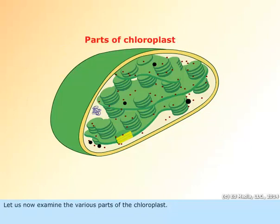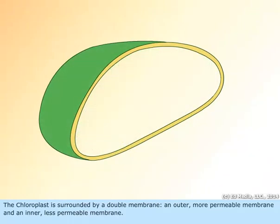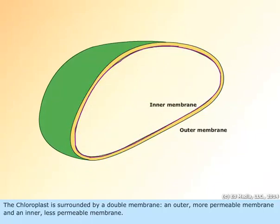Let us now examine the various parts of the chloroplast. The chloroplast is surrounded by a double membrane: an outer, more permeable membrane, and an inner, less permeable membrane.